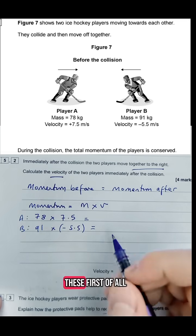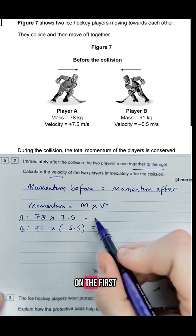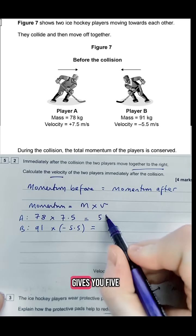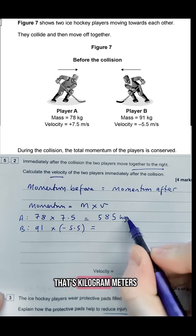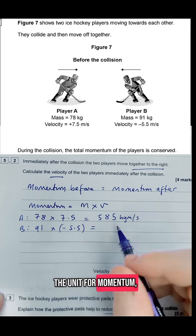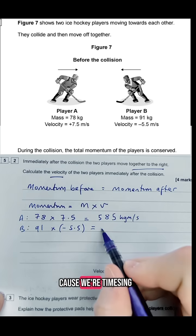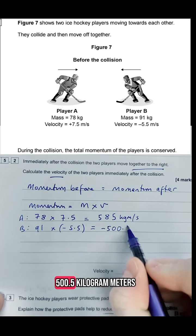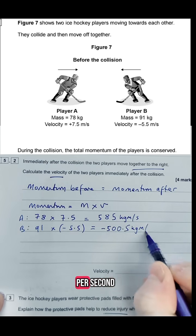So if I work out both of these, first of all that will help us out a bit later on. The first one, if you times those two numbers together gives you 585 and that's kilogram meters per second, the unit for momentum. The second one is going to be negative because the times by negative gives you minus 500.5 kilogram meters per second.